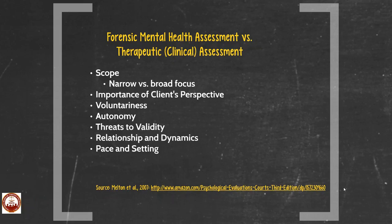The second variable is the importance of the client's perspective. In a therapeutic environment, you are very much focused on the client's reality — how they view things, their preferences, their story. In a forensic evaluation, you are interested in that, but you're more focused on objectivity and trying to get a sense of reality. In forensic settings, clients are often highly motivated to distort information, whereas in clinical evaluations they may be more forthcoming because they're coming to you wanting or needing help.